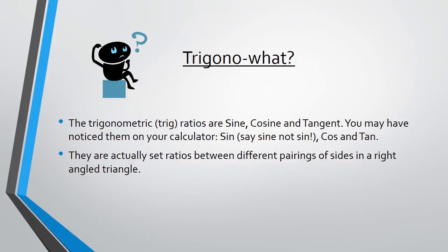They are actually set ratios between different pairings of sides in a right angle triangle. They allow us to find missing information about right angle triangles.